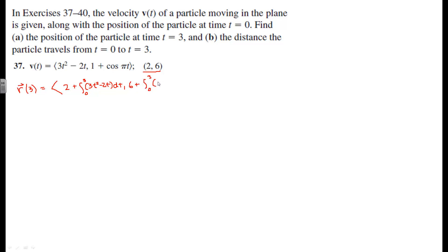Now what's left is evaluating these integral expressions. This is going to be 2 plus the antiderivative of 3t squared, which is t cubed, minus the antiderivative of 2t, which is t squared, evaluated from 0 to 3.